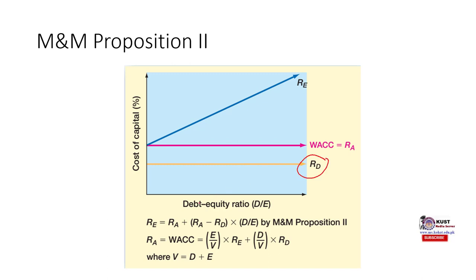The cost of debt remains the same — 8 percent — no matter whether you increase the debt-to-equity ratio or not. In the first scenario with 80 percent equity and 20 percent debt, cost of equity was 13 percent. After increasing to 50/50, cost of equity increased but WACC remained the same at 12 percent in both cases. This visually confirms that WACC is unaffected by changes in the debt-to-equity ratio.